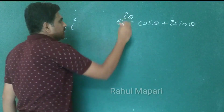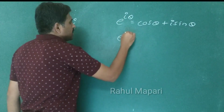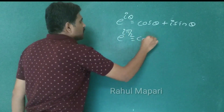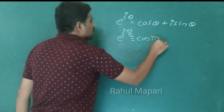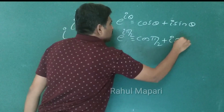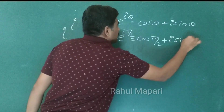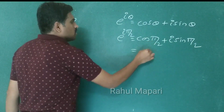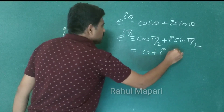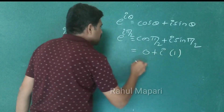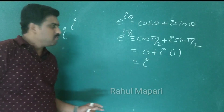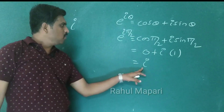If I put theta as pi by 2, so what we get? cos(π/2) plus i sin(π/2), and this is nothing but cos(π/2) is 0 plus i sin(π/2) is 1. So ultimately we get i. So the value of i is e power i pi by 2.